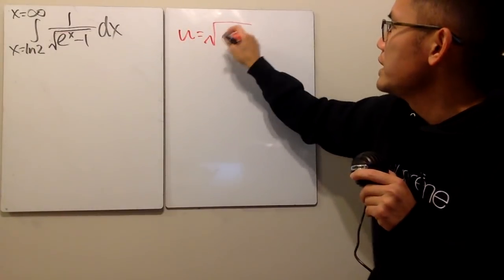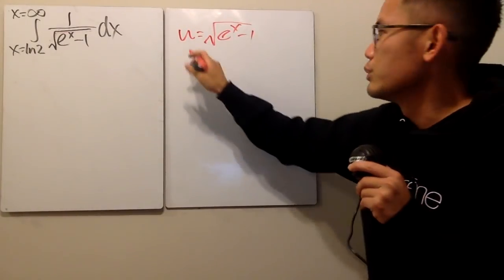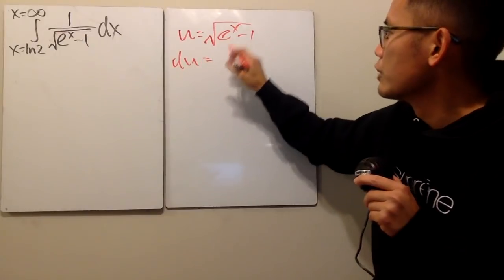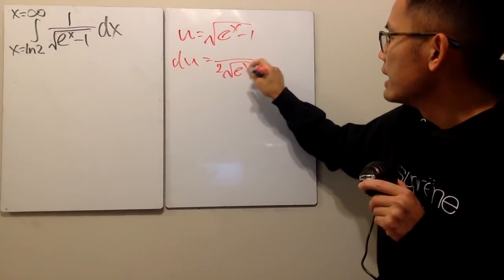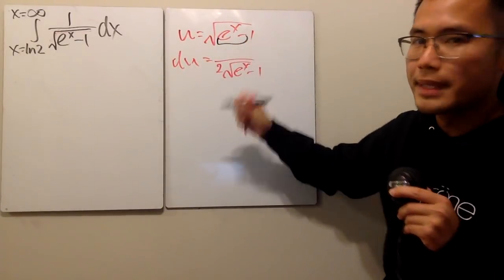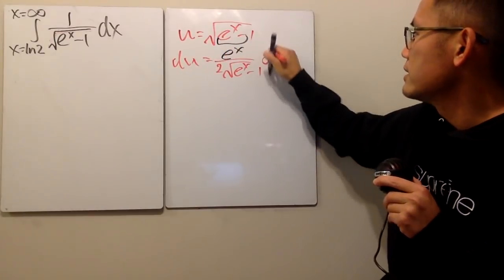To do that, we are going to let u equal to the denominator, which is square root of e to the x minus 1. And differentiate both sides, we get du is equal to 1 over 2 square root of e to the x minus 1, and don't forget the chain rule to multiply the derivative, which is going to be e to the x, and then dx.